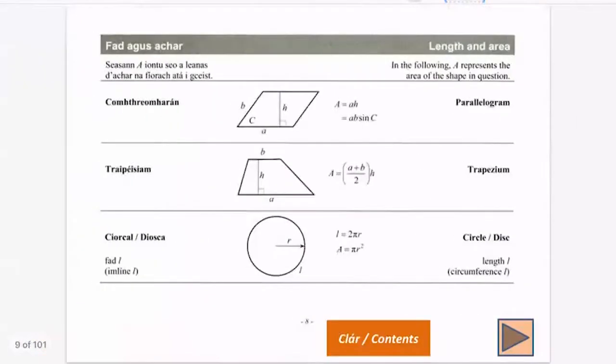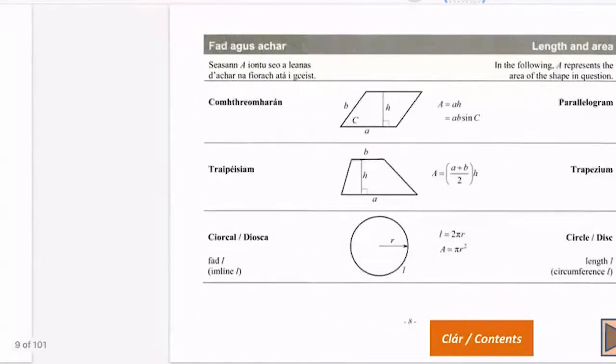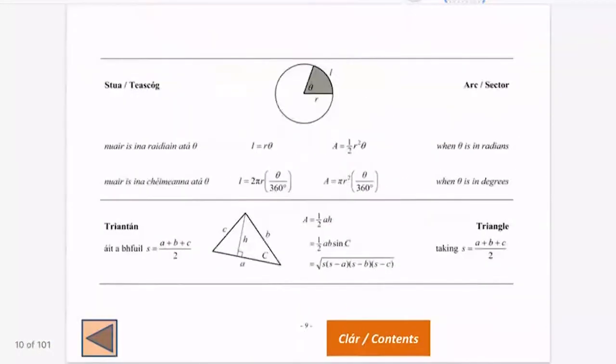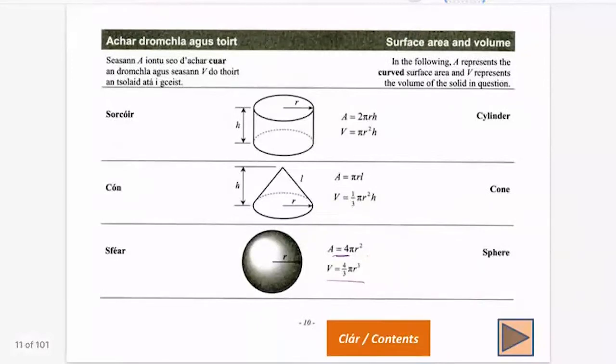So area and volume - very important that you know where these formulas are in the log tables. Length and area are the first real pages of the log tables, page eight and nine. And then if you flick on another one, you get surface area and volume, which deals with 3D shapes.